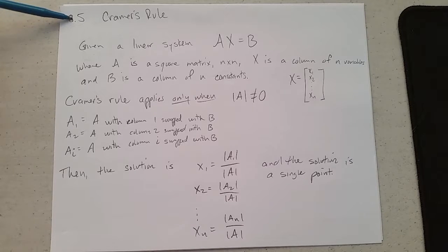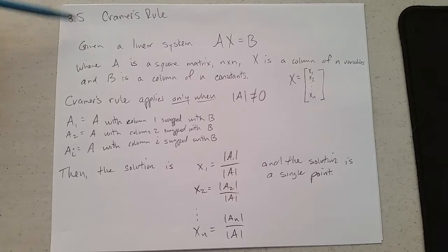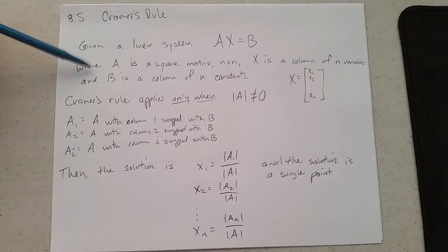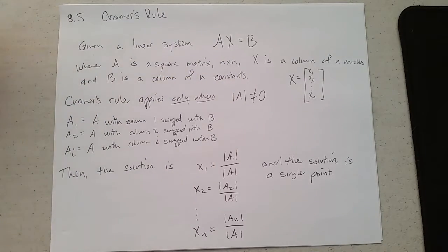Cramer's rule uses determinants to solve a linear system. If we have a linear system Ax equals b, where A is a square matrix, n by n, it needs to be square. x is a column of n variables and b is a column of n constants.